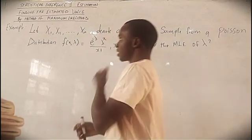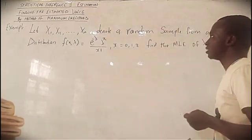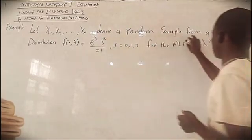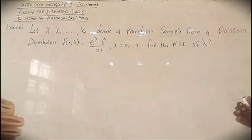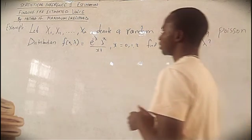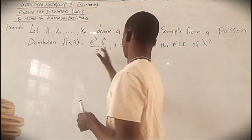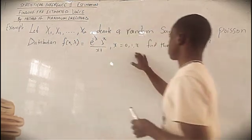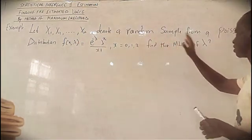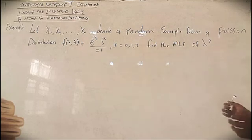The problem states: let X1, X2, up to Xn denote a random sample from a Poisson distribution. You have f(x; λ) equal to a given expression, and you want to find the MLE of λ.